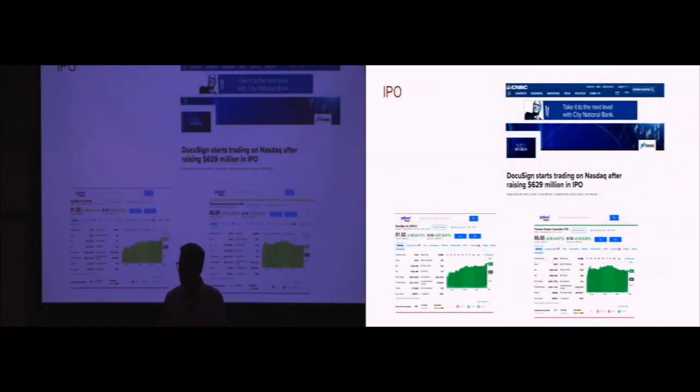We had the first IPO in legal tech. DocuSign went public earlier this year. They had a very successful IPO, which is given the current landscape quite surprising. And what's interesting is the market cap is almost $11 billion, which I think is quite remarkable if you see that Thomson Reuters' market cap is about $33 billion. And Thomson Reuters is the big behemoth player in the space.